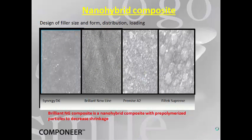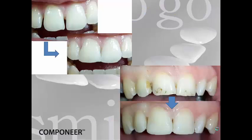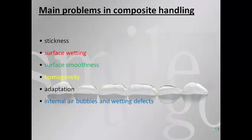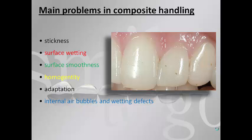The other type is the nano-hybrid composite. The filler size, form, distribution, and loading differs from one composite to another. Brilliant NG composite is a nano-hybrid composite with pre-polymerized particles to decrease shrinkage. This composite can be used to close diastemas, to mask discolorations, and to lengthen teeth.